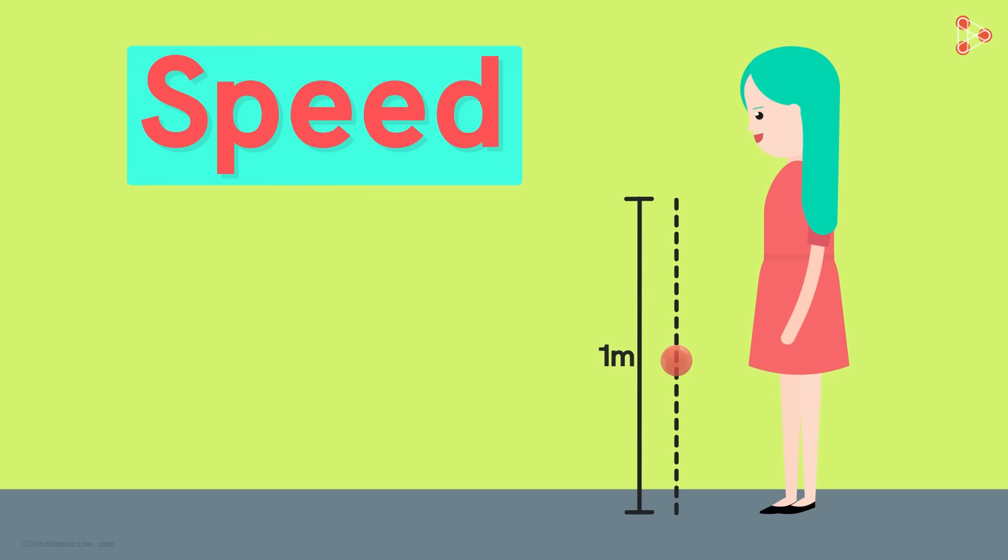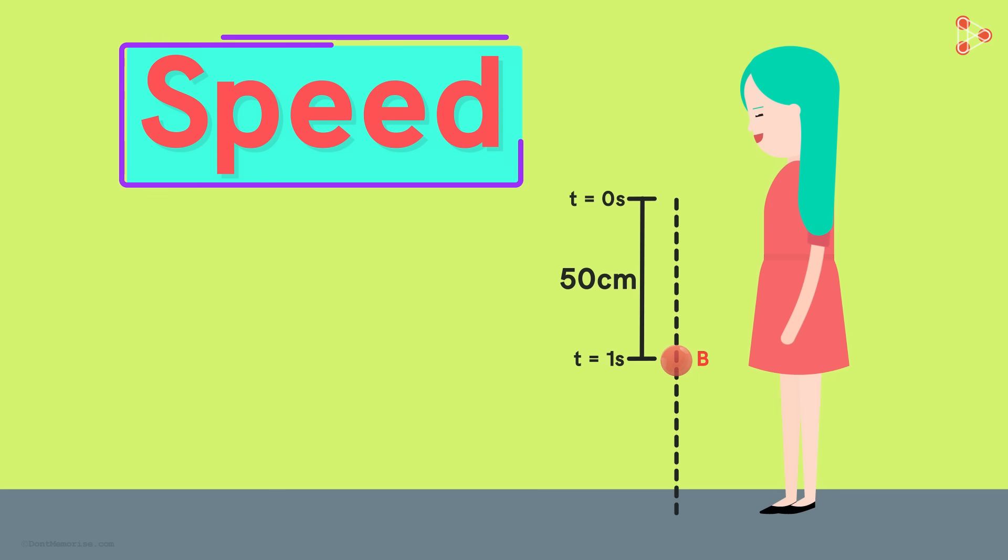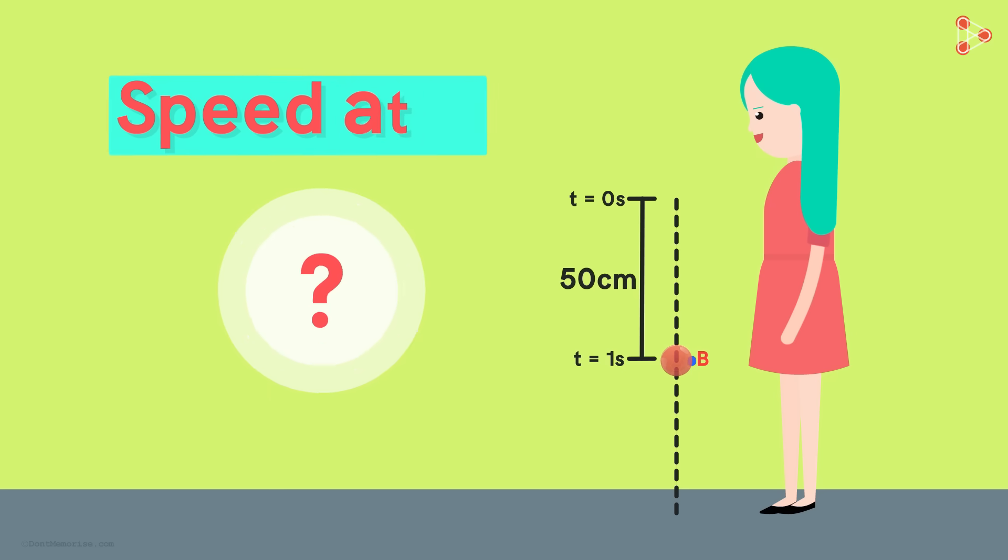She drops the ball from a height one meter above the ground. It covers 50 centimeters to reach the midpoint. Nora knows that it took one second for the ball to reach the midpoint B. With this information, can she find the speed of the ball exactly when it is at point B?